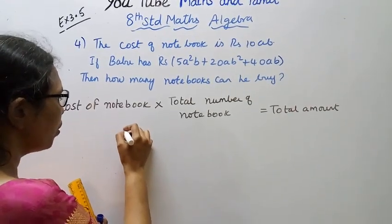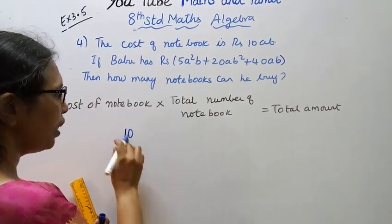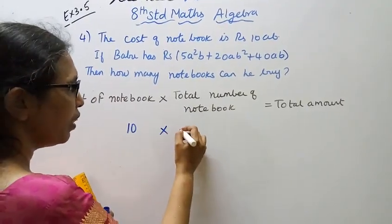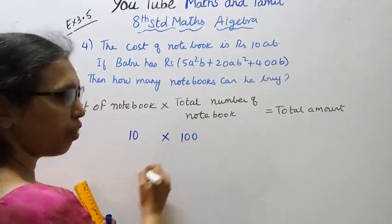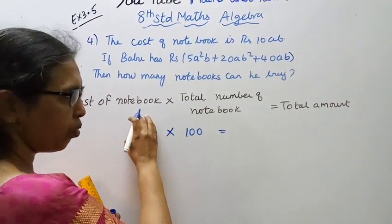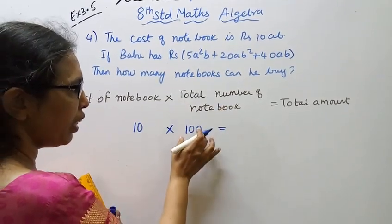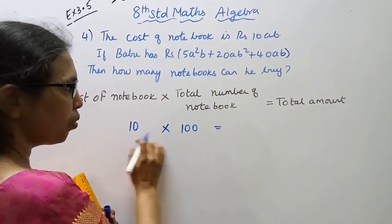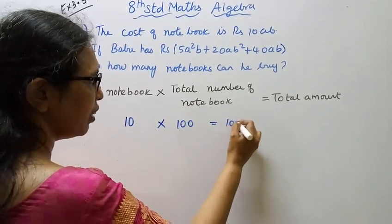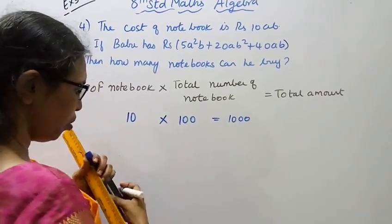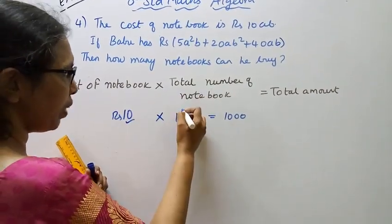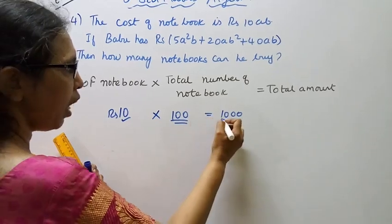If a notebook costs 10 rupees and you have 1000 rupees, how many notebooks can you buy? 100 notebooks. One notebook is 10 rupees, 100 notebooks is 1000 rupees. The cost times the total number equals the total amount.